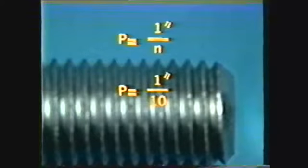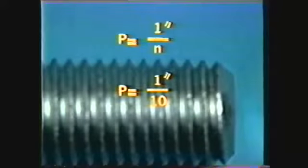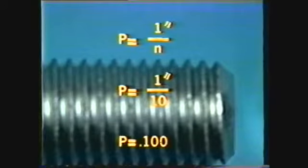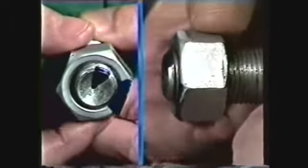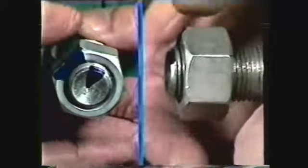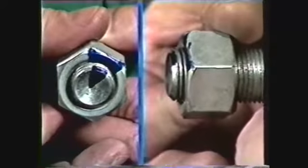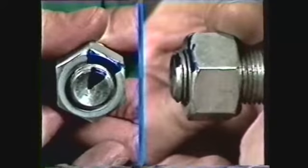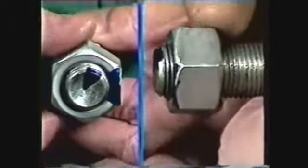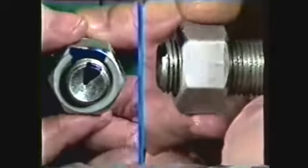The pitch in inches equals one inch divided by the number of threads per inch. For example, the pitch of a screw having ten threads per inch would be one inch divided by ten, or one hundred thousandths of an inch. The lead of a thread is the distance the thread advances along the axis in one turn. In a single thread screw, the lead is equal to the pitch. In a double thread screw, the lead is twice the pitch.